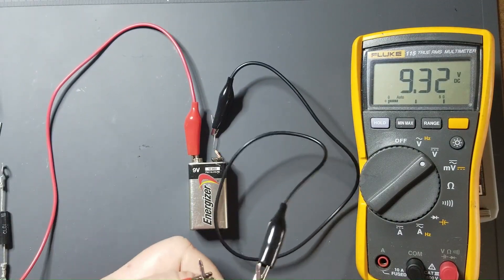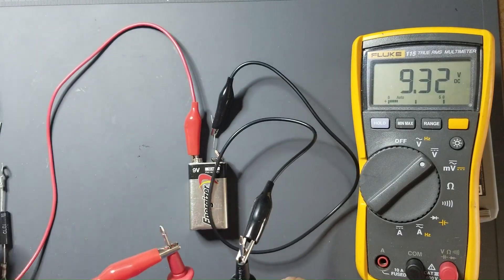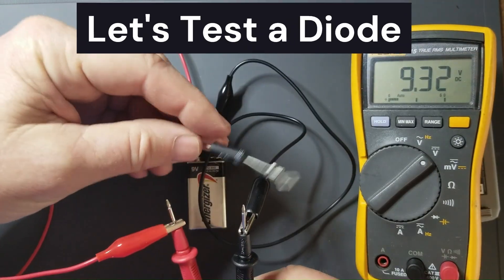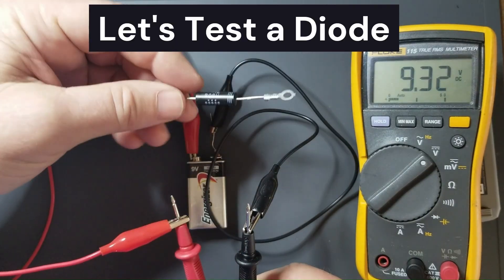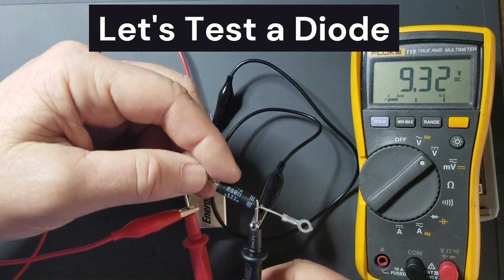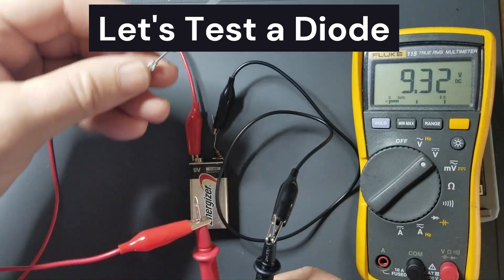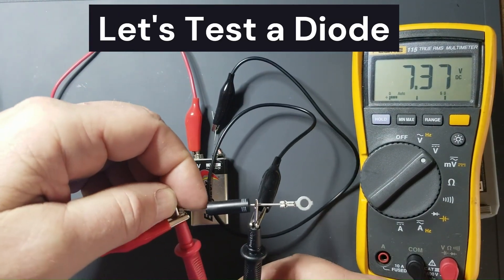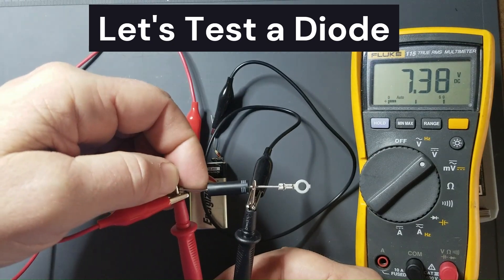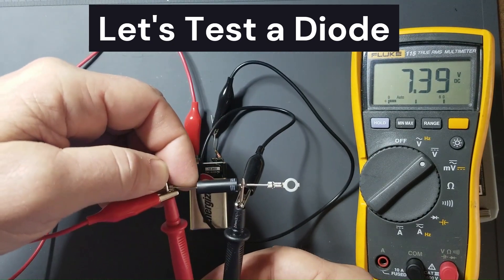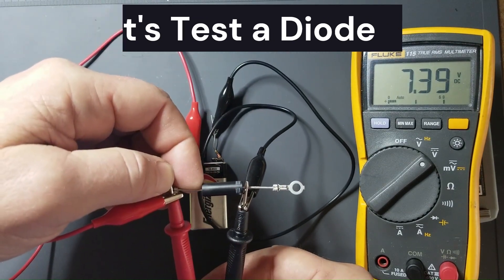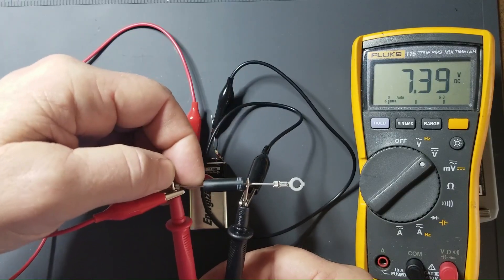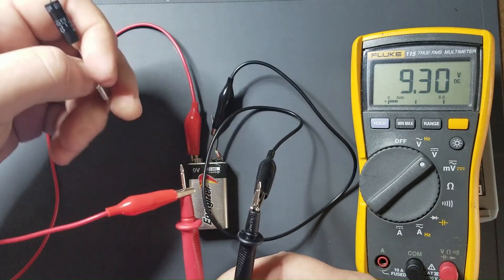Now if I want to measure the forward voltage drop of this microwave diode here I would take the banded side which is the negative side and connect it to the black lead of the multimeter. I'll take the other side and connect it to the red lead. When I do that the forward voltage drop of this diode imposes itself on the circuit and drops the voltage down to 7.4 volts which is the forward voltage drop of this diode.